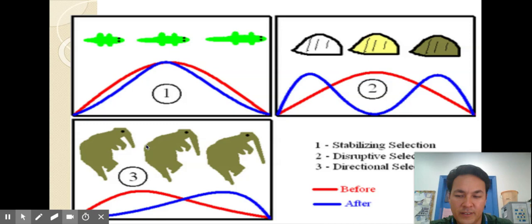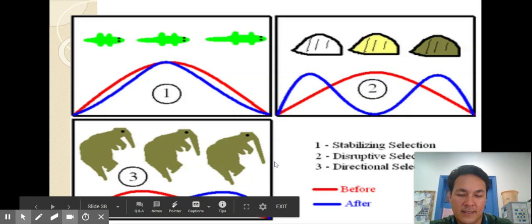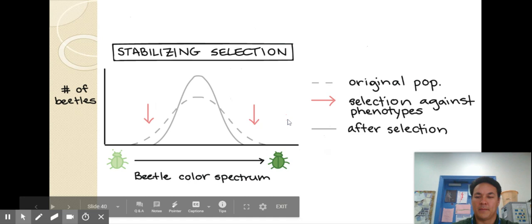Here's the anteater right the anteater with the longest trunk is able to get the most ants so over time it's selecting for a longer trunk. All right can you come up with some examples?